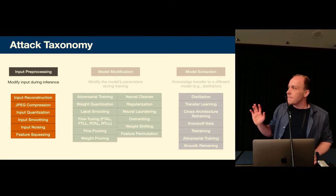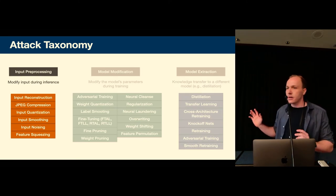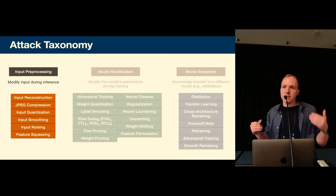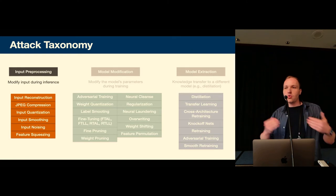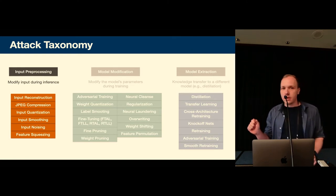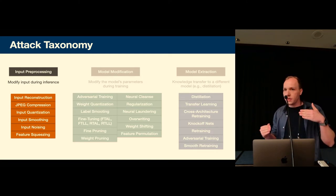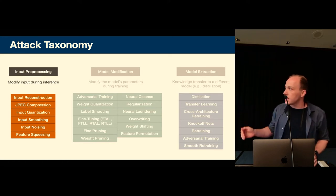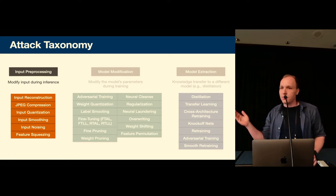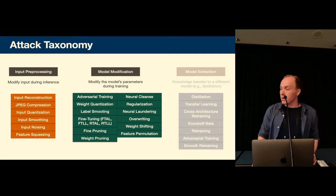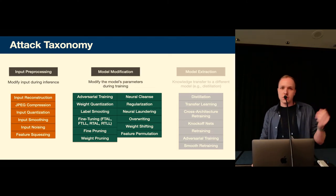Okay so the same taxonomy also exists for the attacker. So now we have an attacker that took a model that downloaded a model and they want to corrupt the message that a defender would read from the model. So here we have three categories. So the first are input pre-processing attacks where the attacker takes the image perturbs it and then passes it forward to the stolen model. And here for example we have input noising where they just add random noise or input smoothing where they blur the image effectively.